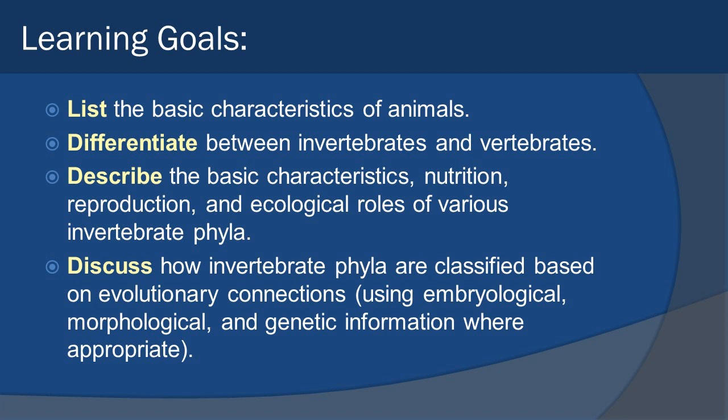Here are the learning goals for this lecture: listing the basic characteristics of animals, differentiating between invertebrates and vertebrates, and going into specifics about different invertebrate phyla. These learning goals will carry over the next two note sets. Today we're covering three different phyla and will continue on in the next lecture.